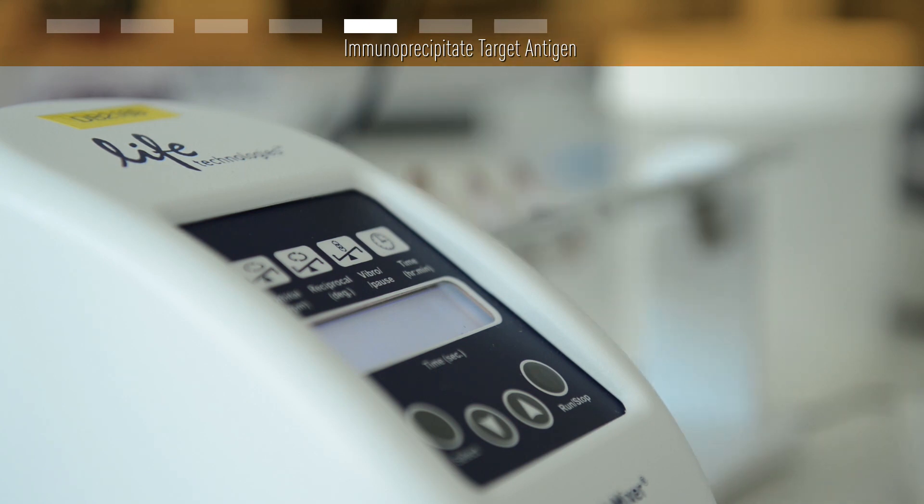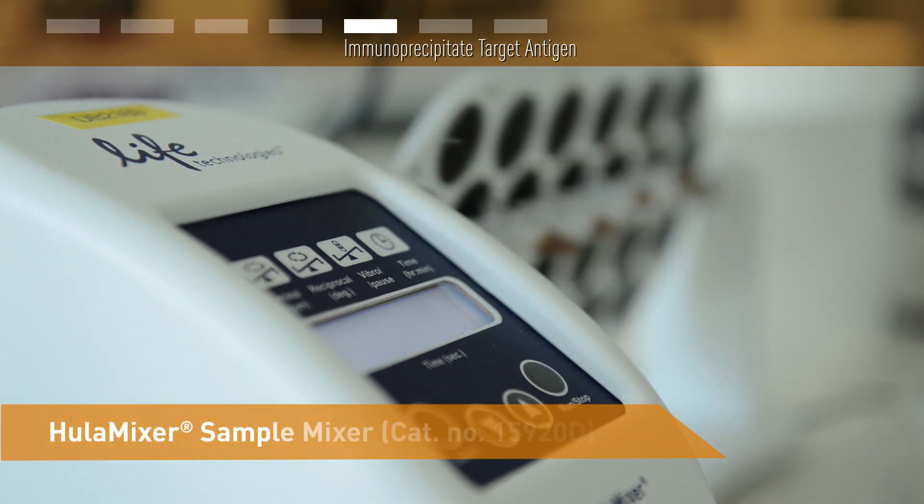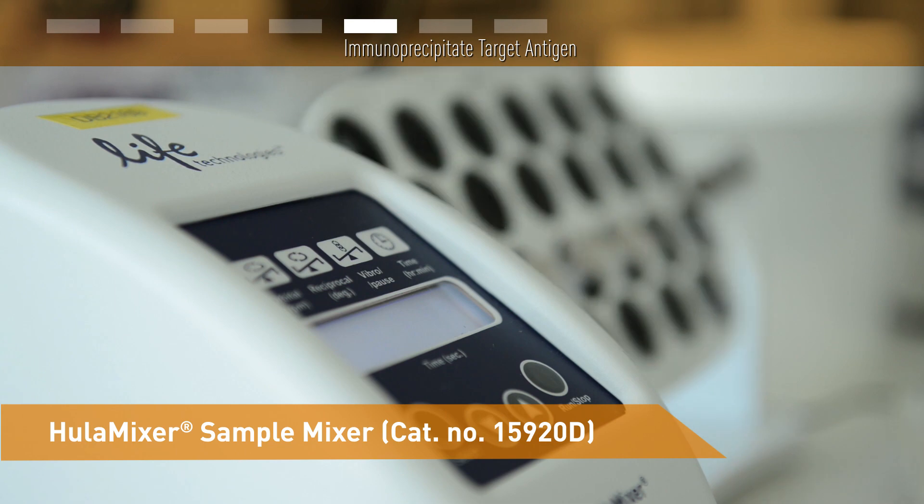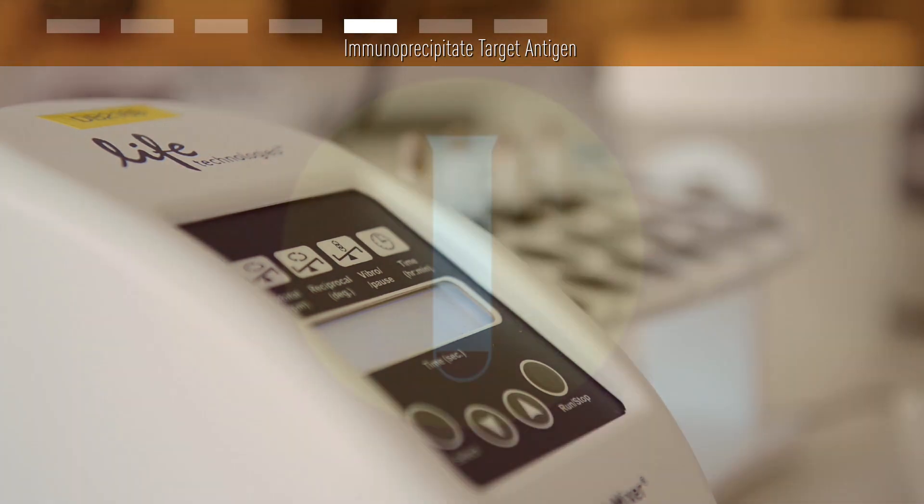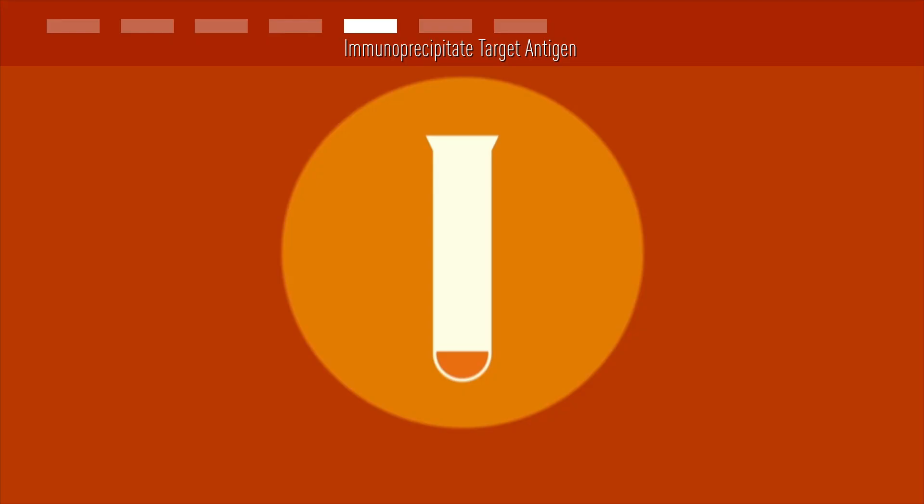Good mixing is important, and we recommend using a sample mixer that allows for tilting and rotation, such as the Hula mixer. An alternative approach for low affinity antibodies or difficult targets is to incubate antibody and sample before you add the beads. This could improve the binding kinetics and keep nonspecific binding at a minimum.